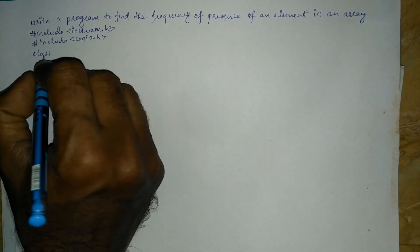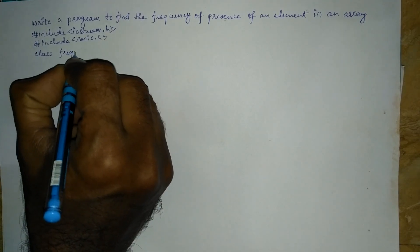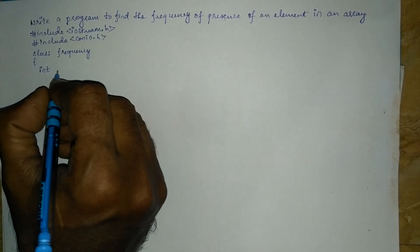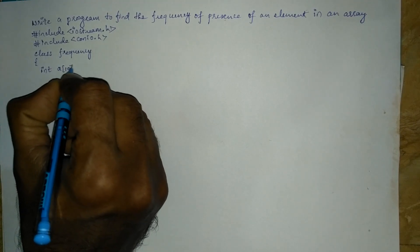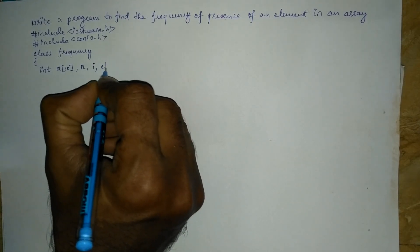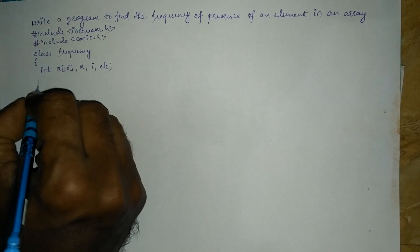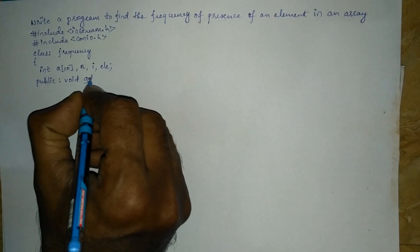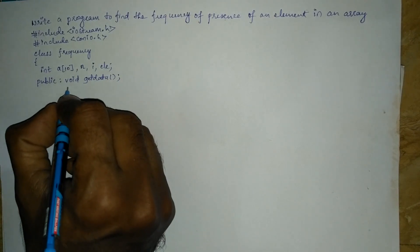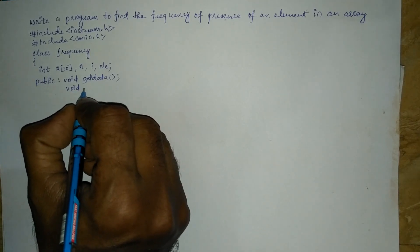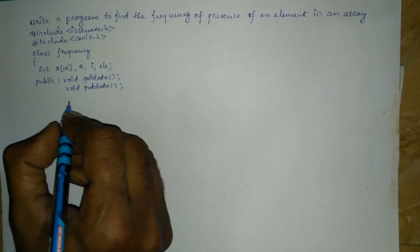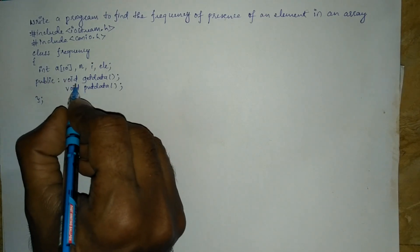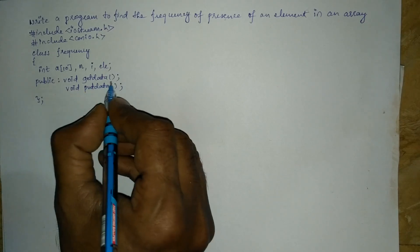Now let us define a class. Class is a keyword and I am going to write the name of this class as 'frequency'. Inside the curly brace I am going to declare all the necessary variables: int array a of 10, n, i, and ele. In the public section I am going to declare two user-defined functions: void get data and void put data. The curly closing brace and semicolon indicate the termination of the class definition, which contains the two declared functions get data and put data.